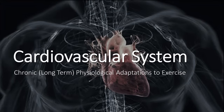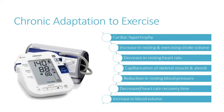Welcome to the lesson on the cardiovascular system. We're going to look at a few chronic adaptations to exercise — changes that occur over a longer period of time due to prolonged exercise. We're going to look at the following: cardiac hypertrophy, increase in resting and exercising stroke volume, decrease in resting heart rate, capillarisation of skeletal muscle and the alveoli, reduction in resting blood pressure, decreased heart rate recovery time, and an increase in blood volume.